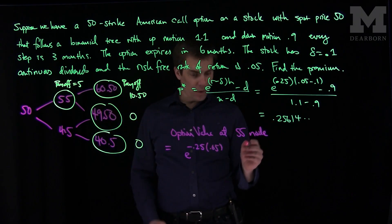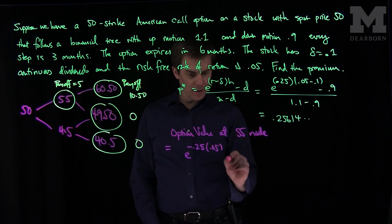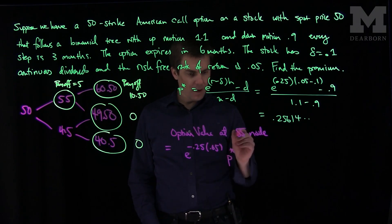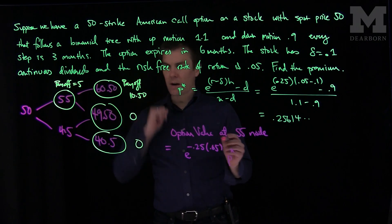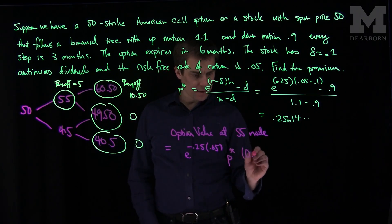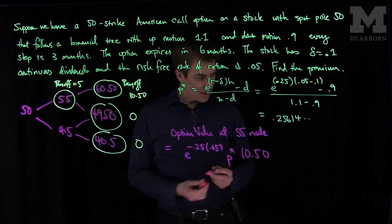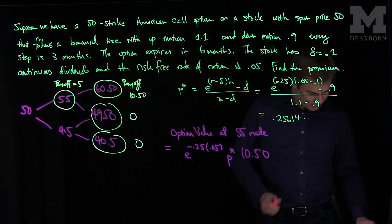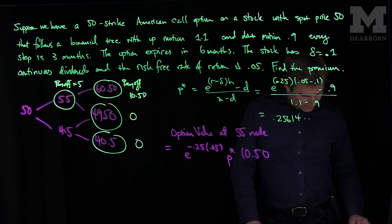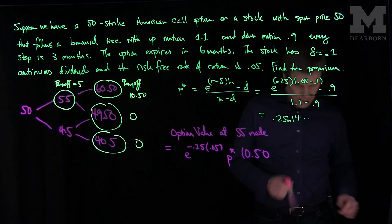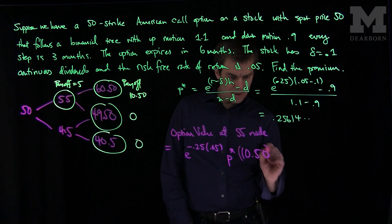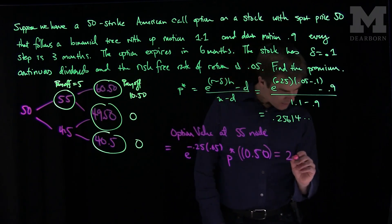That's the discount factor. Then I have the probability P star, times the payoff which would be $10.50. When we plug this into the calculator, we compute this as times 10.5, times e to the negative 0.25 times 0.05, and we get $2.65.